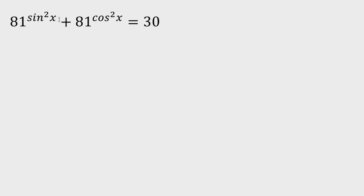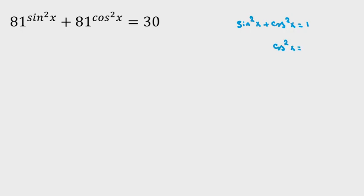Here we see sine squared x and cosine squared x. These two things have a famous relationship: sine squared x plus cosine squared x equals 1. From this we can replace and conclude that cosine squared x equals 1 minus sine squared x.